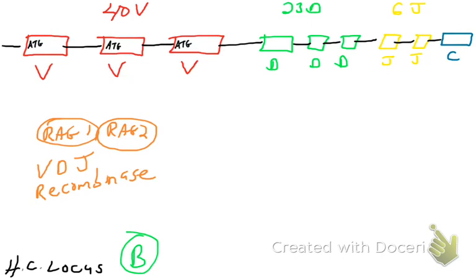So in a B cell that's developing in the bone marrow, you've got the V gene segments, the D gene segments, and the J gene segments. And there are many of them. As we talked about during somatic recombination, random ones are chosen and cut and pasted together, and it's by the RAG enzymes.